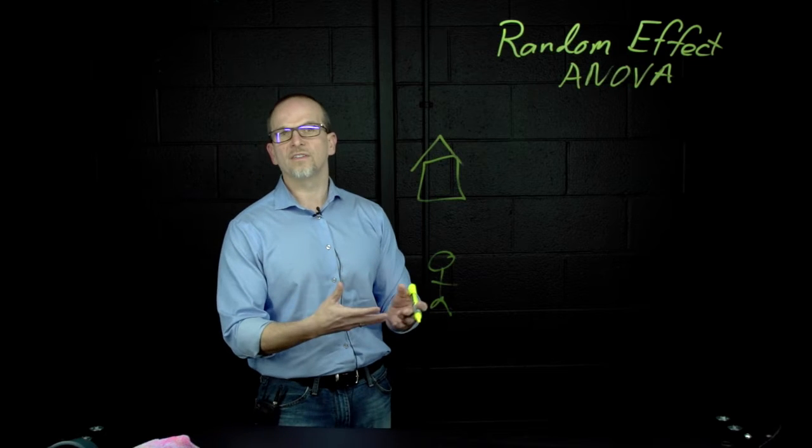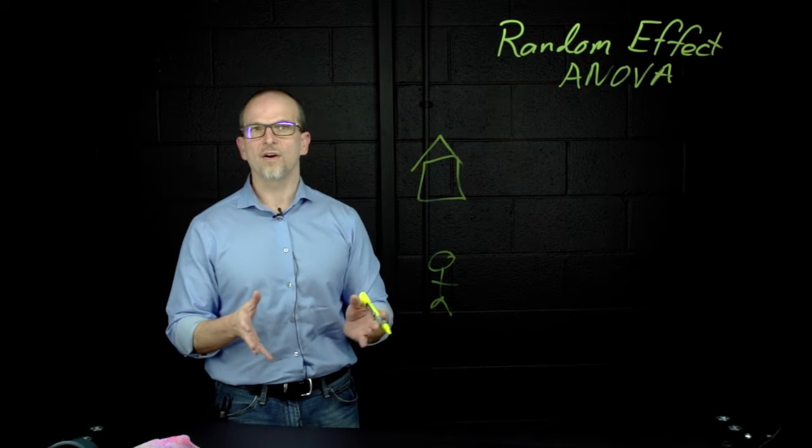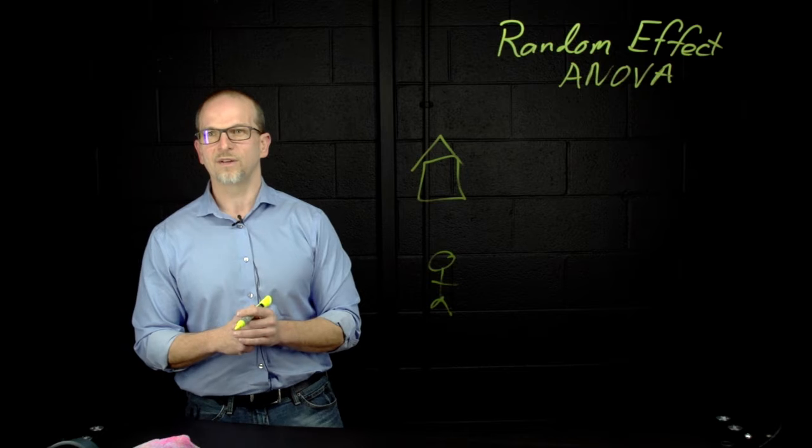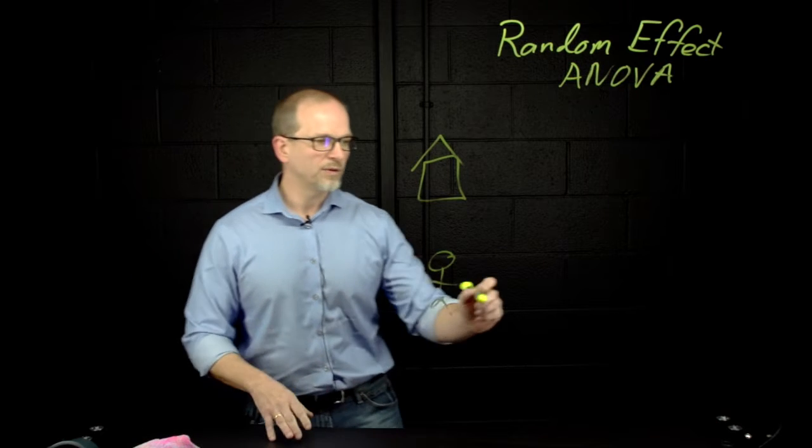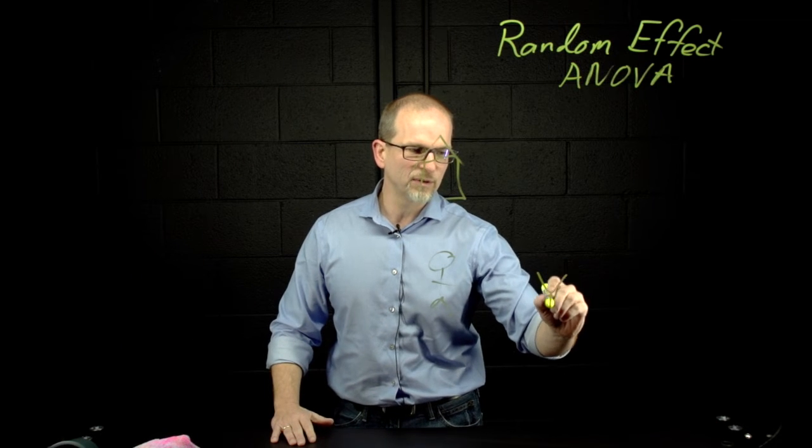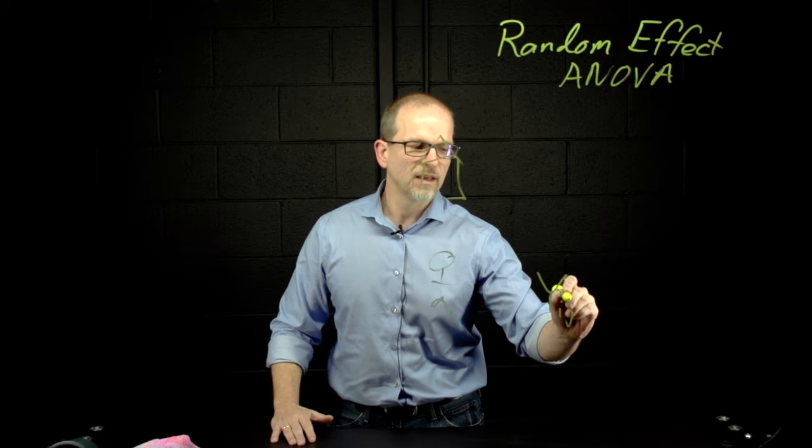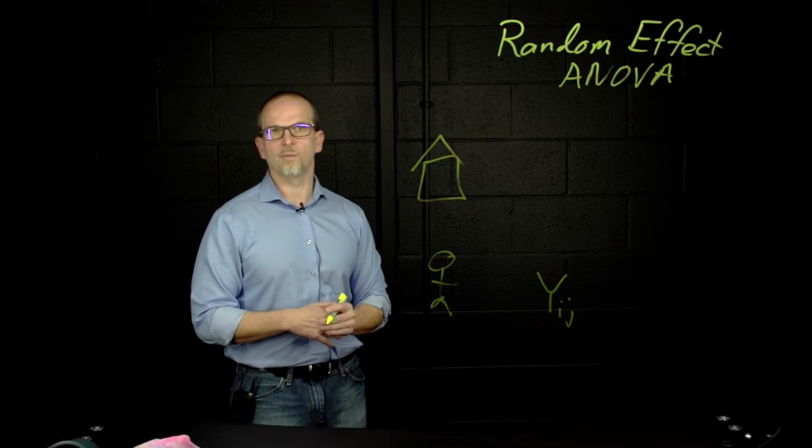Now in that case, our random effects ANOVA does not include any covariates, and so we're only going to have a dependent variable. The dependent variable that we can talk about just as an example could be something like math achievement. And I'll use y sub ij to talk about our dependent variable.